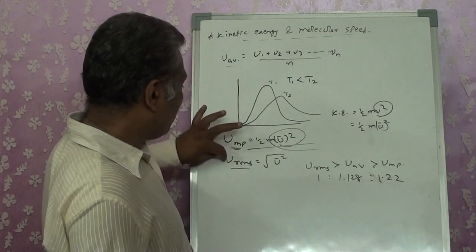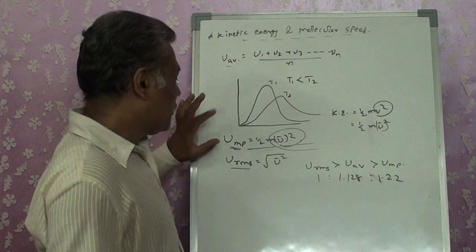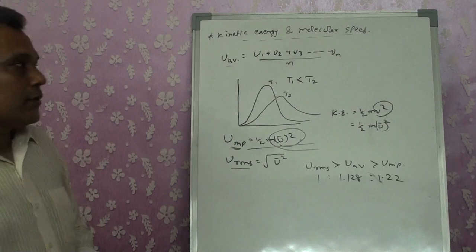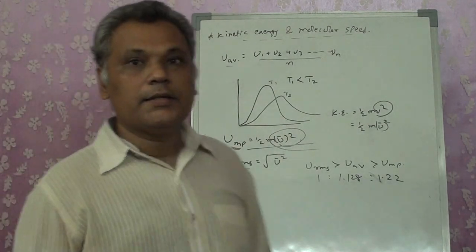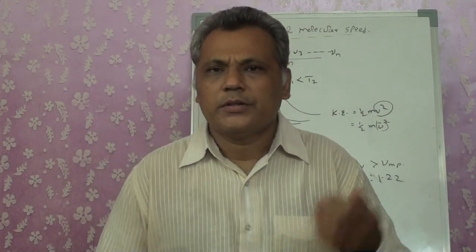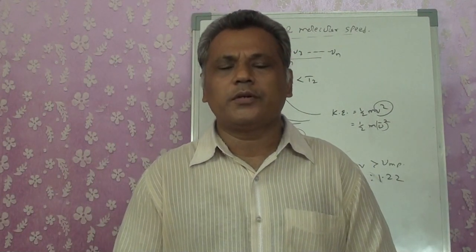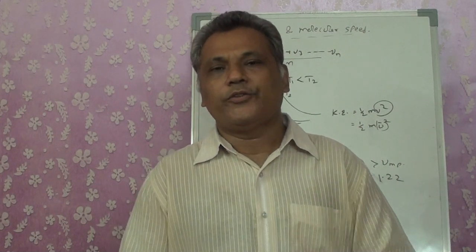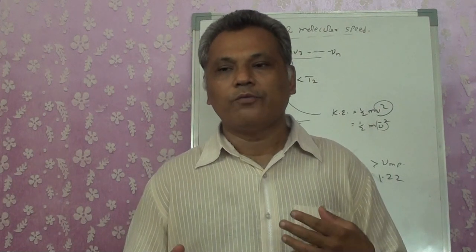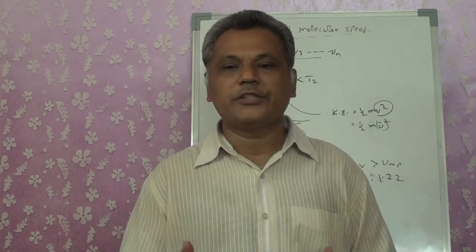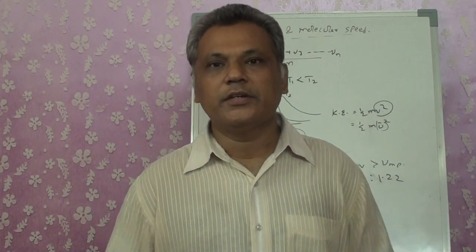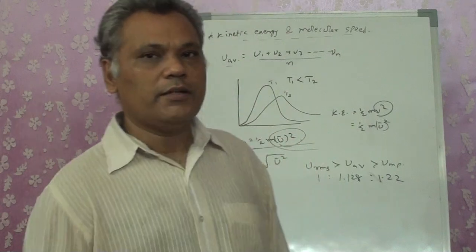So from kinetic energy and molecular speed we get three types of speeds: U_average, U_MP (most probable speed), and U_RMS (root mean square velocity). This is theoretical — you can read it in the textbook where it is given point-wise. In our next lecture we will discuss the case where ideal gas conditions do not hold — the real gas deviations. Thank you.